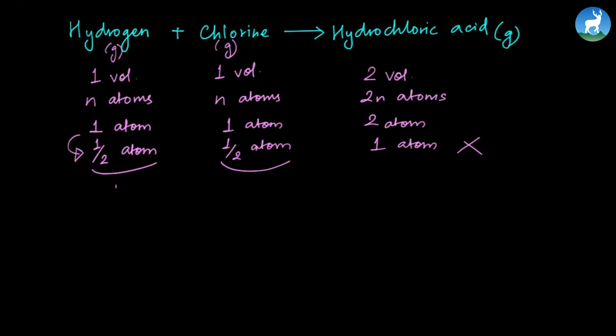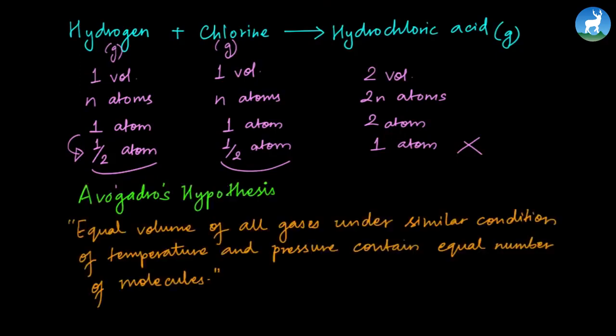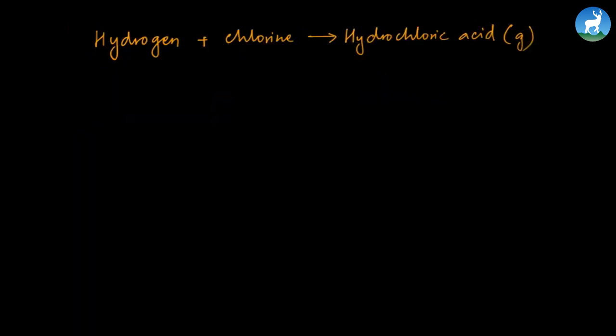This is the statement of Avogadro's Hypothesis: equal volume of all gases under similar condition of temperature and pressure contain equal number of molecules. Avogadro replaced 'atoms' with 'molecules.' That's why Avogadro's Hypothesis supports Dalton's Atomic Theory.